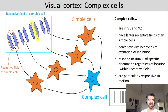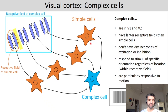It's a larger receptive field, importantly. Complex cells are also particularly responsive to motion. So if you have something moving in the preferred direction, you would see a lot of activation.